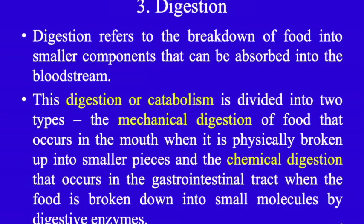Metabolism means all the chemical processes taking place in our body which require energy, involving both building up and breaking down of molecules. In digestion, mainly catabolism takes place — larger molecule to smaller molecule. Anabolism is when smaller molecules join together to form a bigger molecule. Digestion or catabolism is divided into two types: mechanical digestion in the mouth where food is physically broken down, and chemical digestion in the gastrointestinal tract by digestive enzymes.